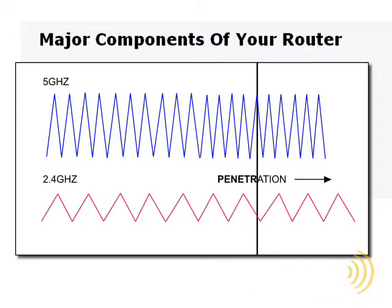The disadvantage of the 2.4 GHz frequency band is it's kind of crowded. You can get a lot of interference from microwaves, cordless phones, baby alarms, and your neighbor's wireless routers.